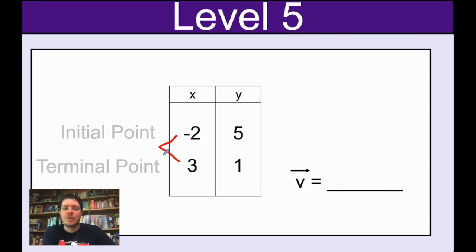How are you going from negative two to three? And that would be plus five. And if you didn't know that, three minus negative two is five. And then over here, how are we going from five to one? Well, we're subtracting four. And if you didn't know that, one minus five is negative four.